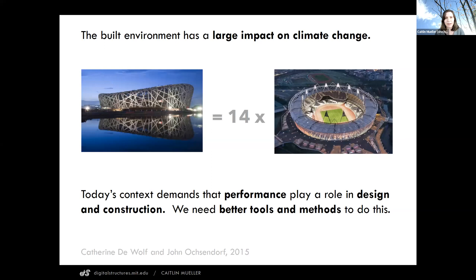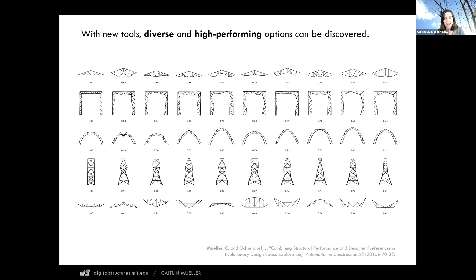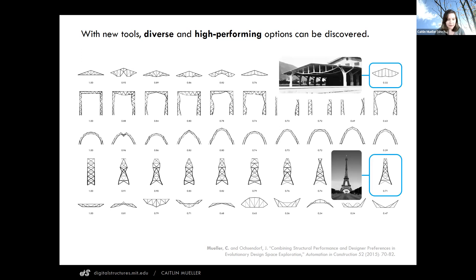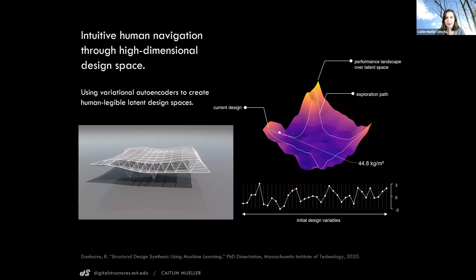I'm interested in ways to do this using new tools where we can combine human creativity and design talent with the computational power of generative methods that can aid in finding very high performing solutions, but also solutions that are not necessarily optimal but that blend a hybrid of design intent, human need, environmental performance, and structural efficiency.